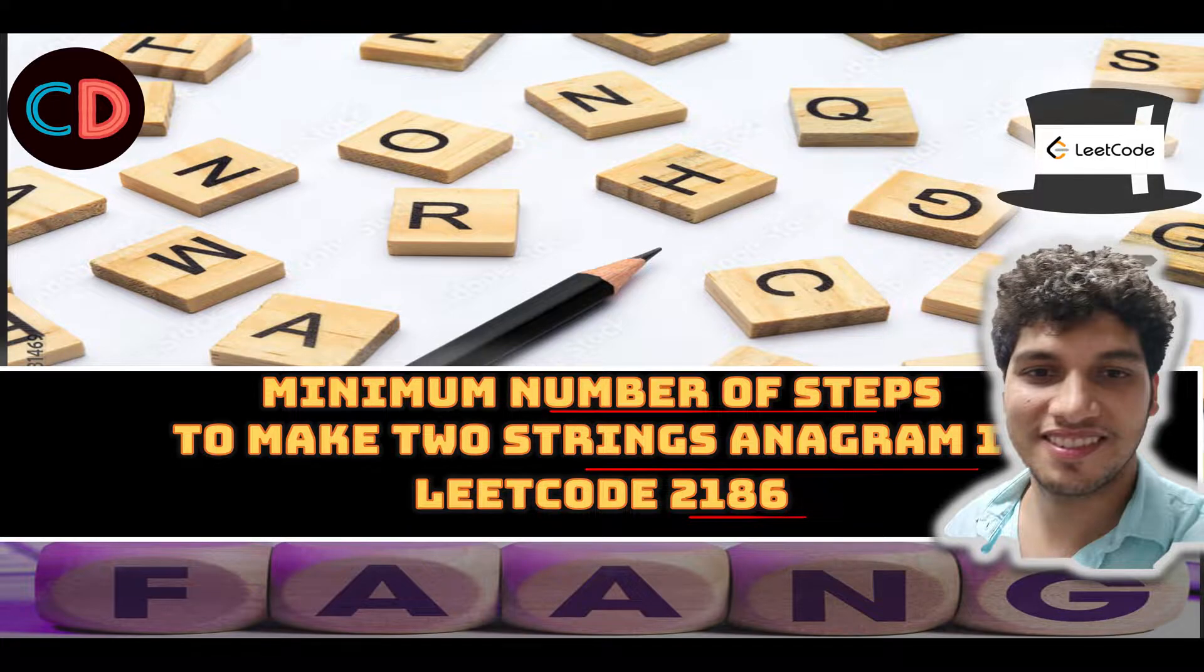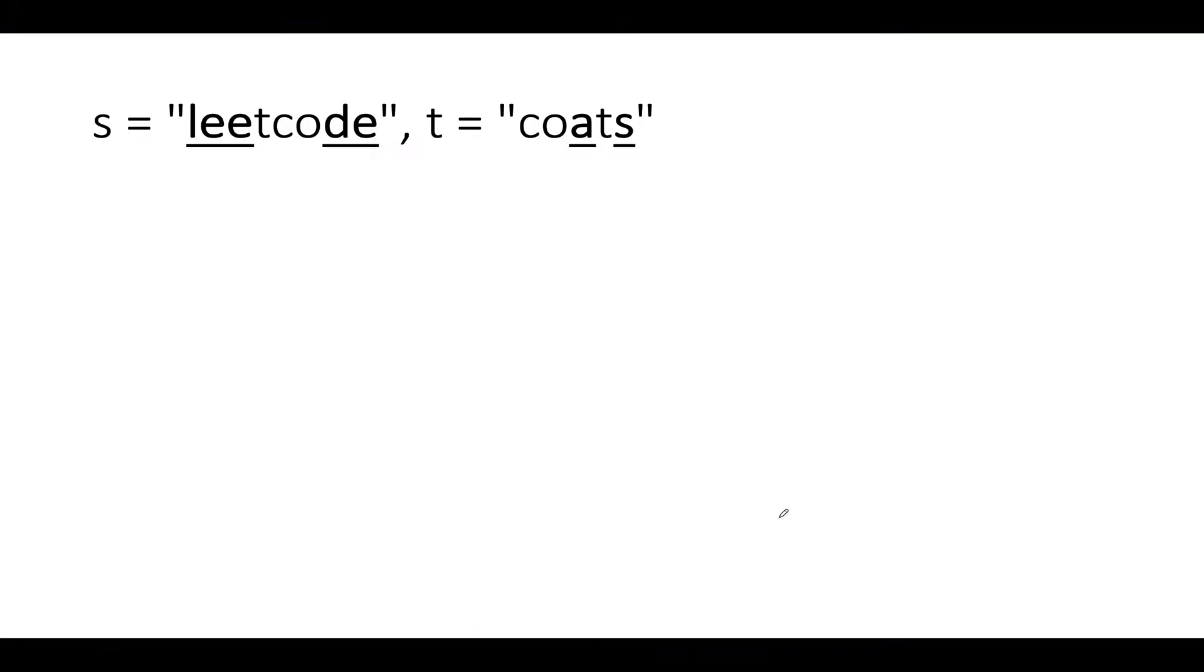Minimum number of steps to make two strings anagram of each other, LeetCode 2186. Let's take the same example that was specified in the question. We have the string s as "leetcode" and t as "coats". If you think carefully, can you look out for your target string which will contain all the characters of s and t?